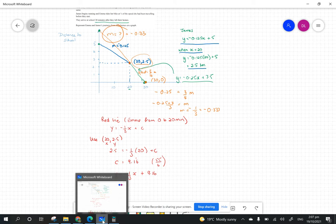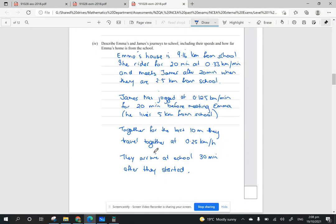You can have a look at the answers when you get a moment. I've written it here and you can write it in any shape or form, but make sure you answer this question including their speeds and how far Emma's home is from school. You need to break it up into the first 20 minutes and the last 10 minutes to make it a full 30 minutes overall.